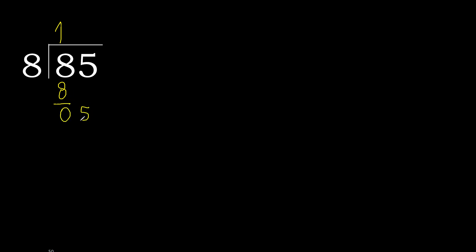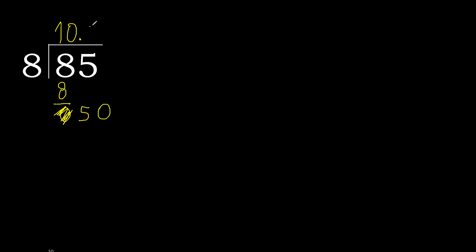Next, eliminate 0 on this side. Bring down 5. 5 is less than 8, therefore next. Always complete with 0 — here: 0 point, because here there are 2 numbers. 50. 8 multiplied by 6 is 48, which is not greater.